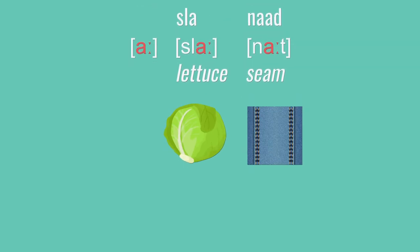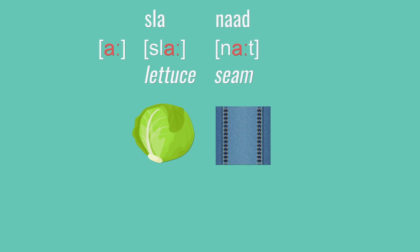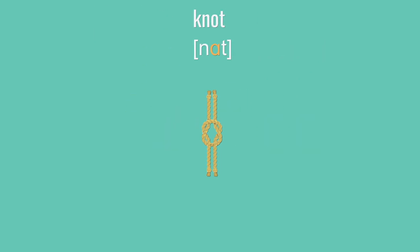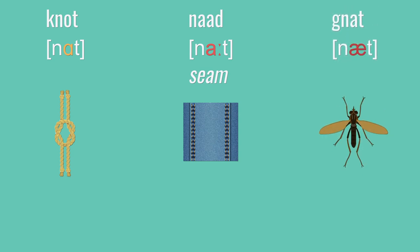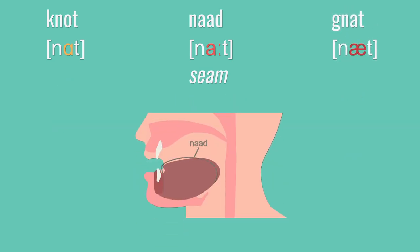Let's look at a kind of new vowel for English speakers. A, as in sla or not. It's pretty close to the English word not. The Dutch variant A is a little more forward in the mouth than the American A. So your tongue is a little bit more towards the front of your mouth, about halfway towards the American A. We can compare Dutch's not to English's not and nat: not, not, nat.